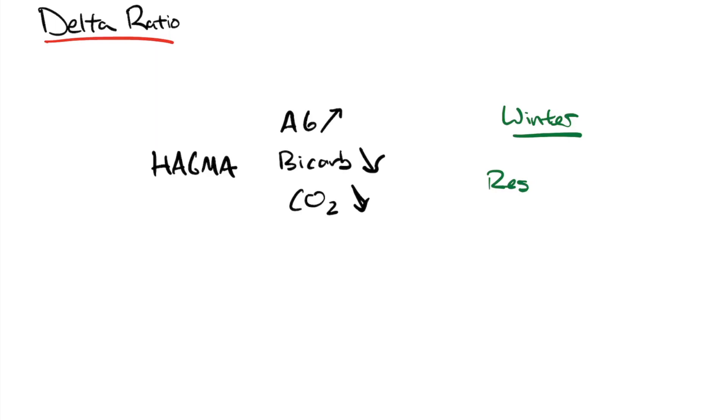What the delta ratio tries to answer is the other side of the coin, which is, is there a secondary metabolic process? The two main categories of this are going to be, one, a metabolic alkalosis.